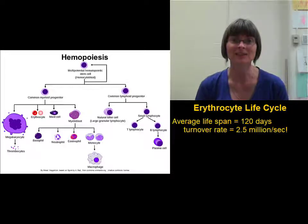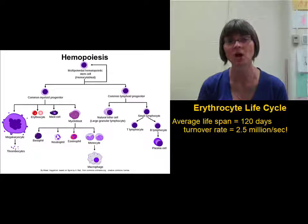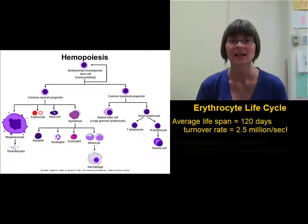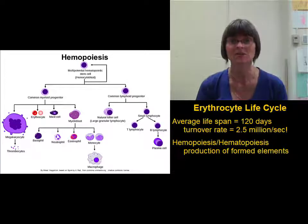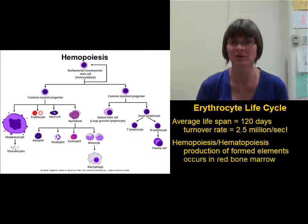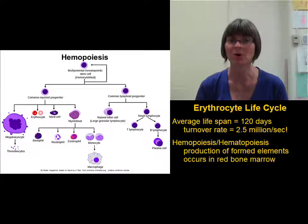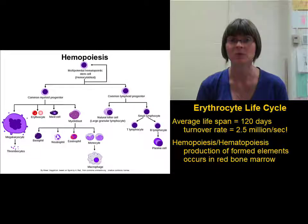The process used to produce not only erythrocytes, but all of the formed elements in the blood, is hemopoiesis, or sometimes called hematopoiesis. Hemopoiesis, or hematopoiesis, occurs in the red bone marrow. There are two types of bone marrow: red bone marrow is where blood is made, and yellow bone marrow stores fat.